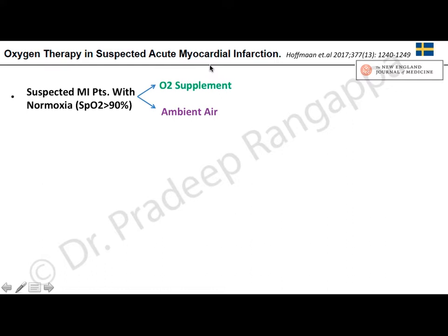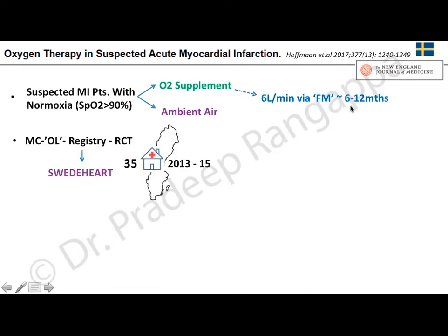The primary endpoint was all-cause mortality at 365 days. Secondary endpoints included all-cause mortality at 30 days, hospitalization due to MI or heart failure, cardiac death, and composite endpoints at 30 and 365 days. In total, 6629 patients were randomized from the registry — 3301 in the oxygen group and 3318 on ambient air.